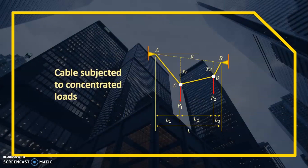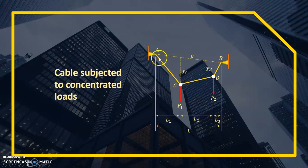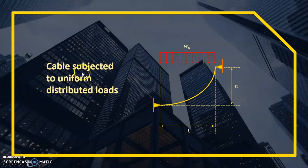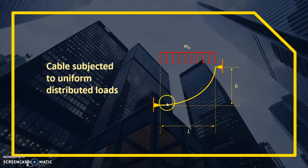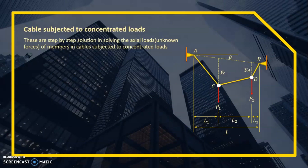This is the behavior of our cables when subjected to concentrated loads. When we have a concentrated load, the cable becomes line segments — it behaves linearly. But for cables subjected to uniform distributed load, the cable maintains its curvature, just like this figure showing the distributed load on the cable. For this presentation, we will first discuss cables subjected to concentrated load.